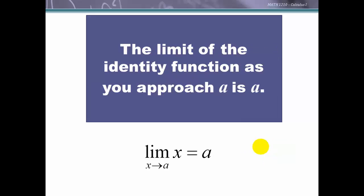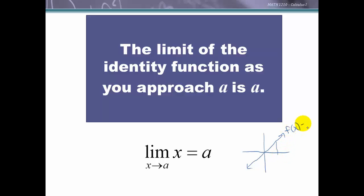The limit of the identity function as x approaches a is a. Again, we can see this graphically: the identity function is f(x) = x, so at x = a the function value is simply a.